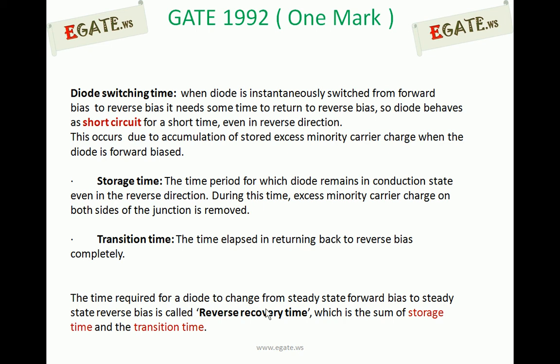This is due to accumulation of stored excess minority carrier charge when the diode is forward biased. Whenever a diode has to change from forward biased to reverse biased, it won't happen instantaneously — it requires a small amount of time. During that time, the diode acts as a short circuit, meaning a large current flows. That current is decided by the voltage at that instant and the resistance in the circuit. This changing time is composed of two parts: storage time and transition time.